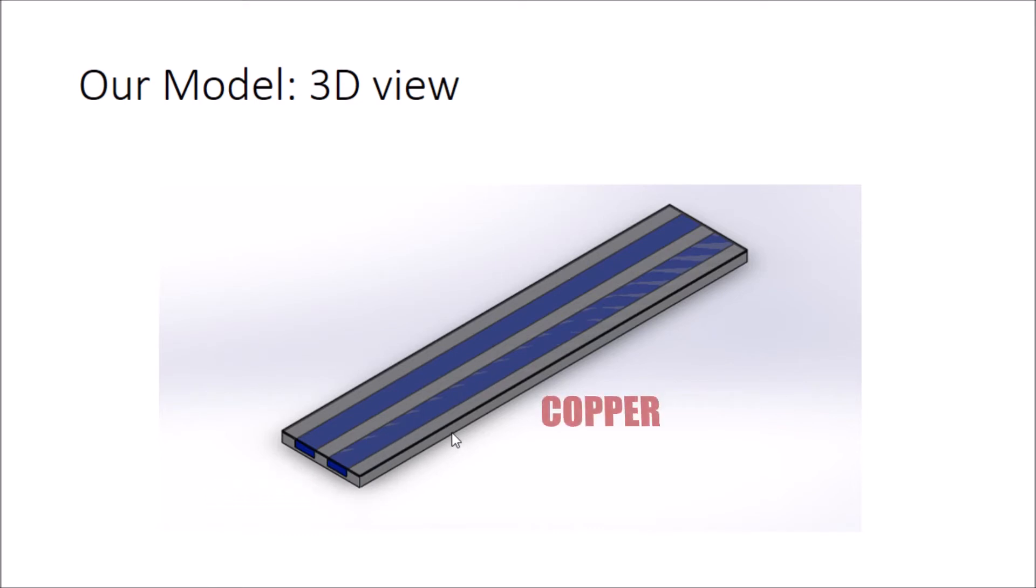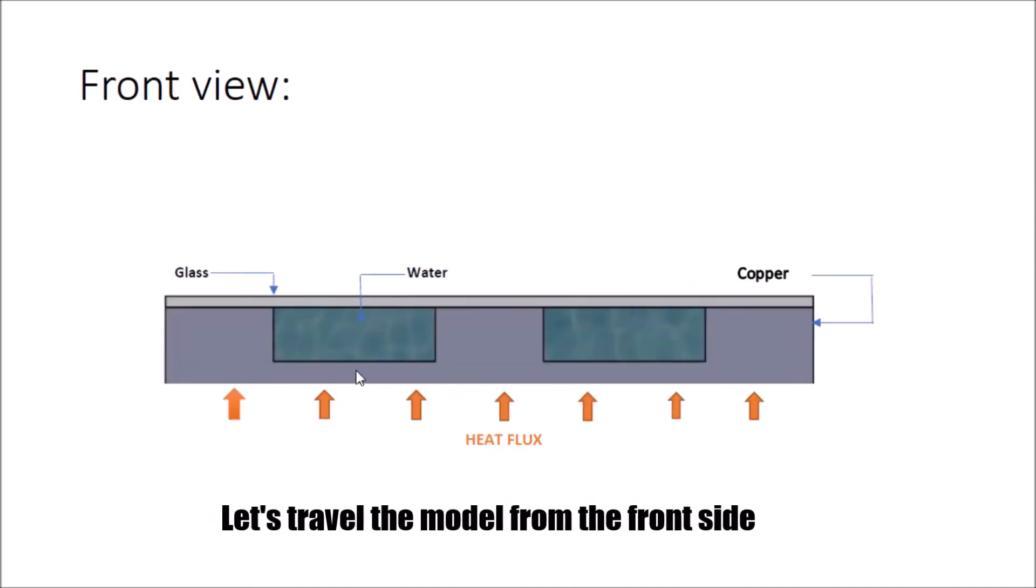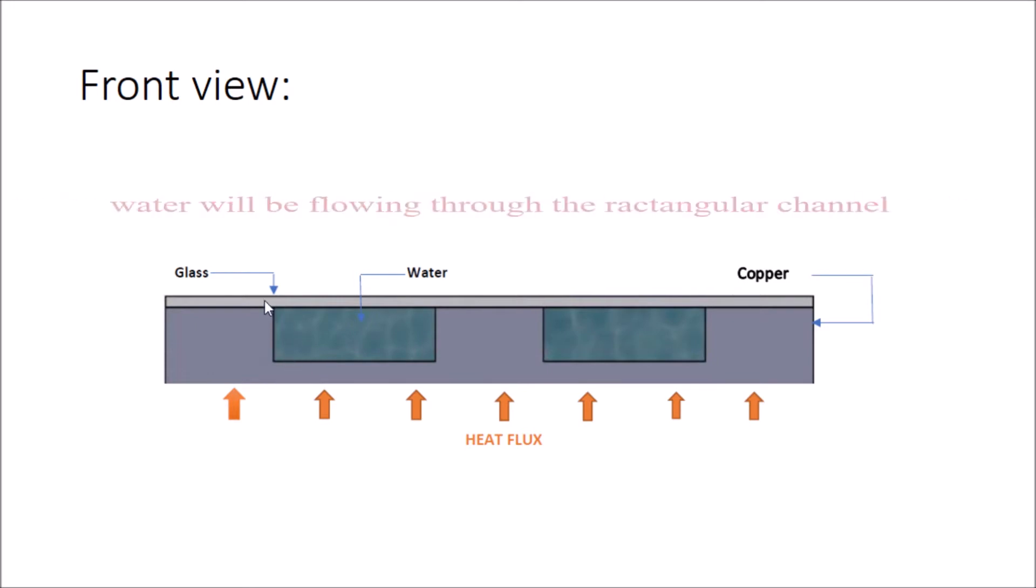You can assume any metal which you prefer. The upper part, which is transparent, we are using glass here. Let's travel this model from the front side. The ash portion is a copper shell and the transparent portion is glass, with rectangular channels in between the copper shell and transparent glass. Lastly, a heat flux will be applied to the lower surface of our model.